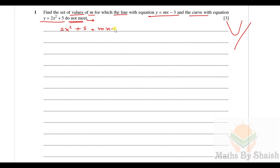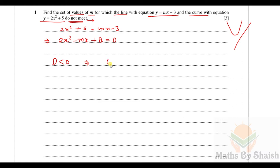We equate them to find the point of intersection: 2x² + 5 = mx − 3. Transforming into a quadratic equation in x, we get 2x² − mx + 8 = 0. For the case when they don't meet, the condition is that the discriminant D = B² − 4AC is less than zero.